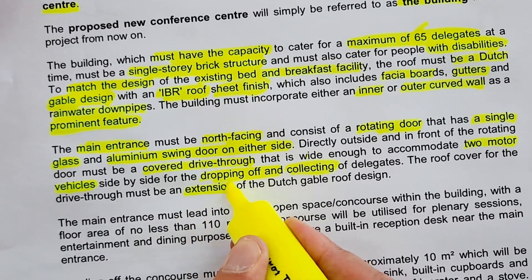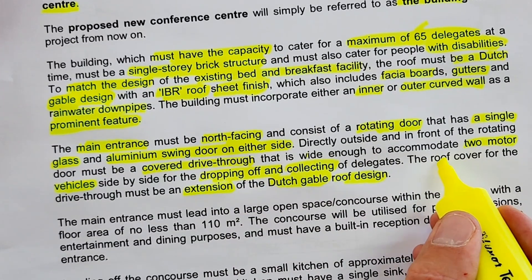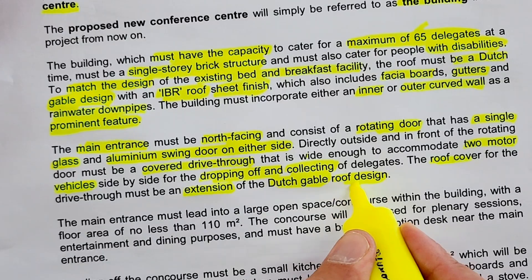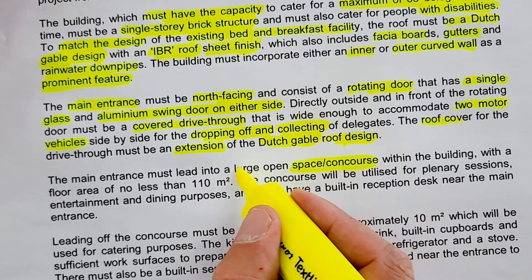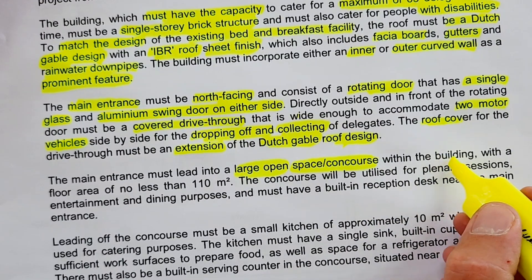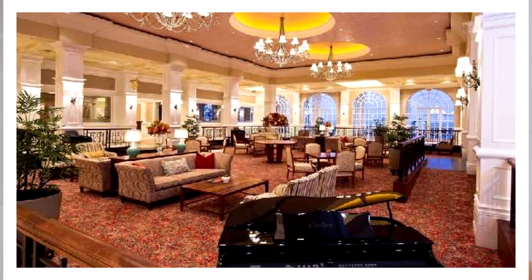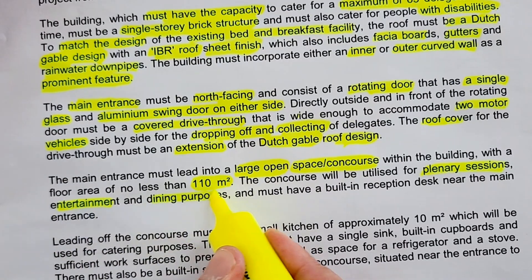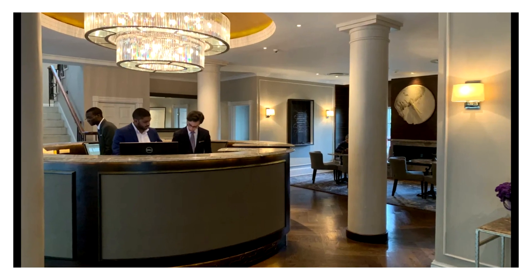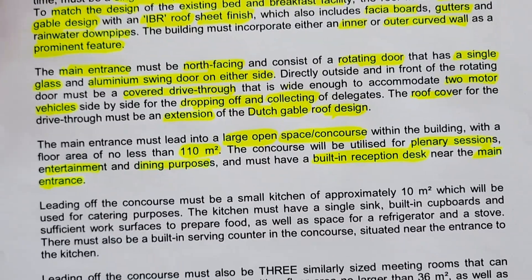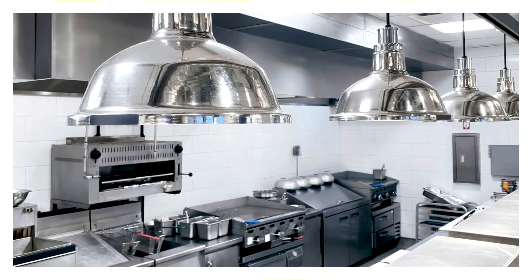The roof cover for this drive-through must be an extension of the Dutch gable roof design. The main entrance must lead into a large open-space concourse with a floor area of no less than 110 square meters. This concourse will be utilized for plenary sessions, entertainment, and dining purposes, and must have a built-in reception desk near the main entrance.